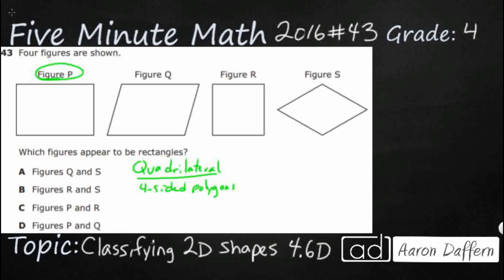So I've got my figures P, Q, R, and S. And that's going to help me kind of get these organized here. So I'm going to first make a little category for quadrilateral here. So how many of these are quadrilaterals? Four-sided polygons.